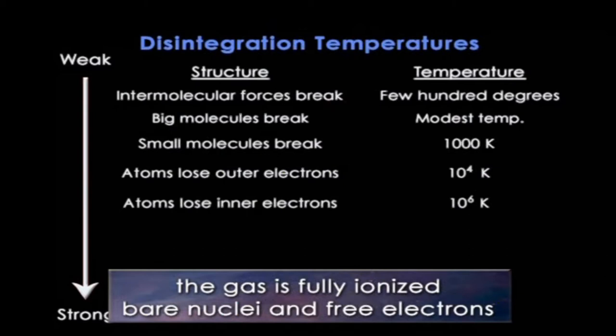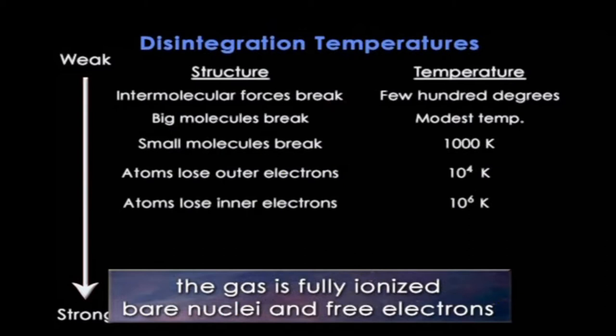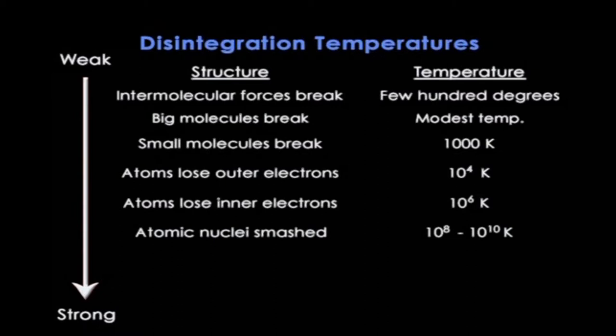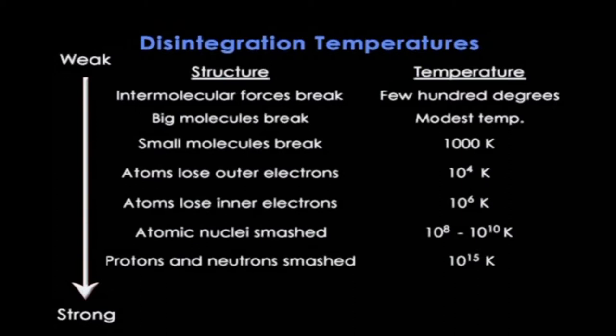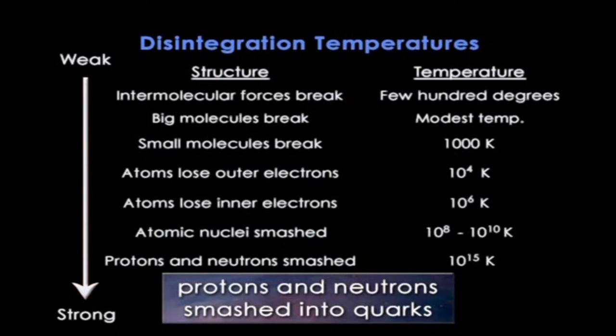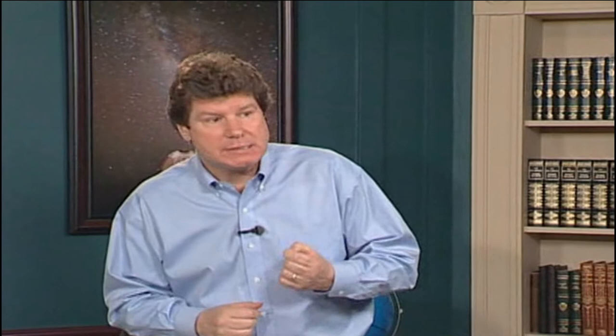By about 1,000,000 degrees, even the innermost electrons are lost and the gas is fully ionized — just bare nuclei and free electrons zooming around at incredible speeds. Between 100 million and 10 billion degrees, atomic nuclei are smashed into free protons and neutrons. At the enormously high temperature of 1,000 billion degrees, even protons and neutrons are smashed into quarks. Nowhere in today's universe do such extreme temperatures exist, but in the first microsecond after the Big Bang, everywhere was above this temperature, and so only the fundamental particles were present.